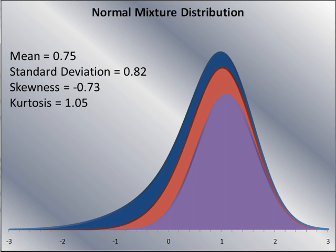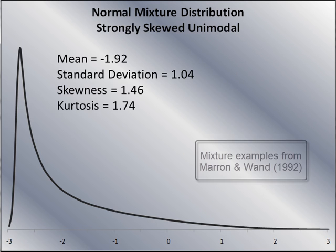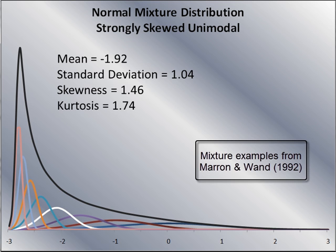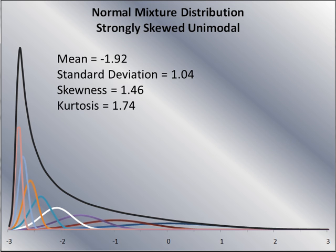So a normal mixture distribution is when we take normal distributions and add them on top of each other. It turns out that with normal mixture distributions, we can produce a very, very wide variety of distributions, not all of which are skewed. Here's a really, really skewed distribution — it consists of a whole bunch of little normal distributions, and as the mean goes up, so does the variability. We'll see later how this distribution helps us understand skewness in more detail.